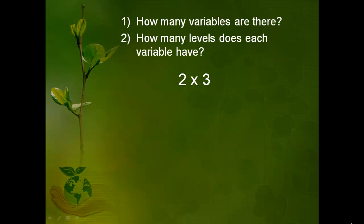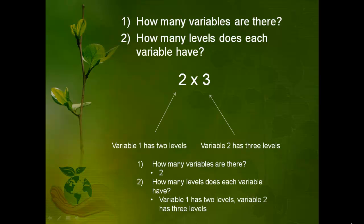Now we're going to go the other way. If I tell you it's a two by three study, how many variables are there and how many levels does each variable have? Unpause the video when you think you know the answer. So the first variable has two levels, and the second variable has three levels. This study has two variables: the first variable has two levels and the second variable has three levels.